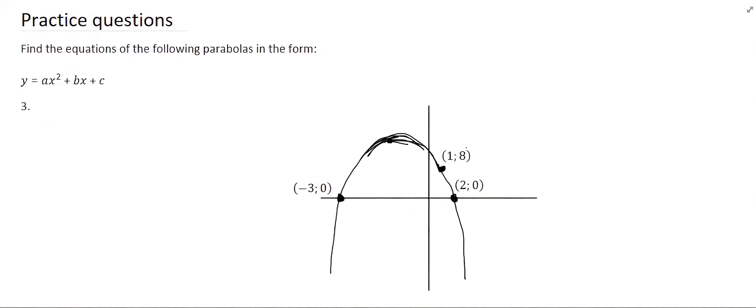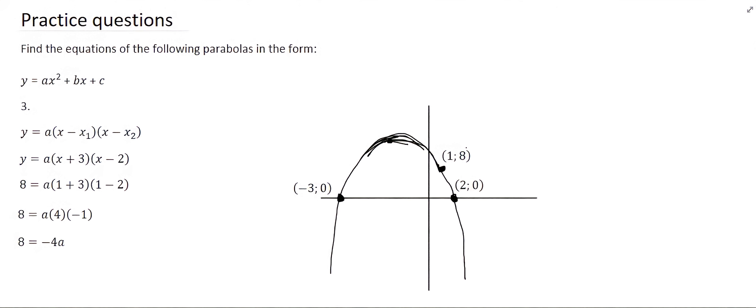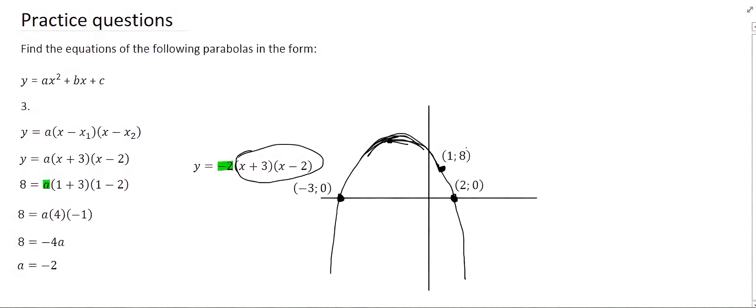In the next example the x-intercepts have been given, so we go straight to the x-intercept formula. The x-intercepts are minus 3 and 2, so in bracket form the equation uses (x + 3)(x - 2). We substitute the other point (1, 8) in place of x and y, simplify each bracket, then divide by negative 4 to get a = -2. We plug this back in, multiply the two brackets together, then multiply by minus 2 to get the final answer.